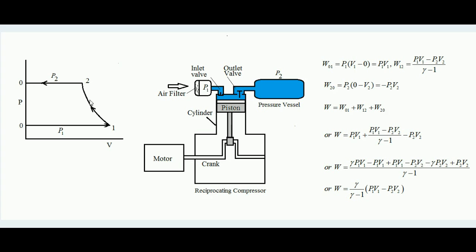The total work done in the cycle is the sum of all three: p1·v1 + (p1·v1 − p2·v2)/(γ − 1) − p2·v2. Taking the LCM and simplifying: γ·p1·v1 − p1·v1 + p1·v1 − p2·v2 − γ·p2·v2 + p2·v2, which reduces — after cancellations — to γ·p1·v1 − γ·p2·v2. Taking γ common gives: W = γ/(γ − 1) × (p1·v1 − p2·v2).